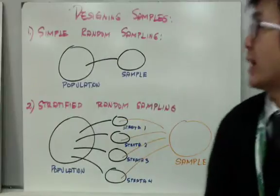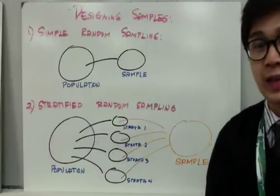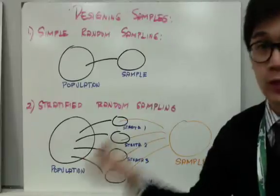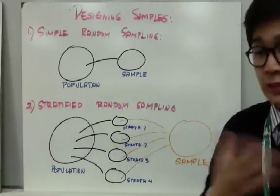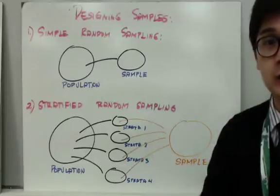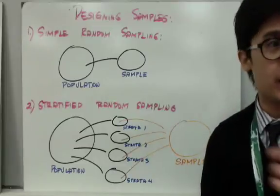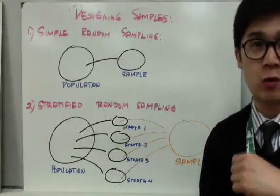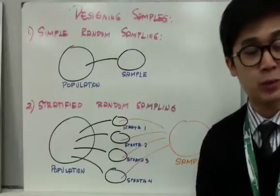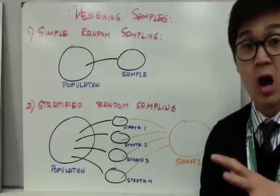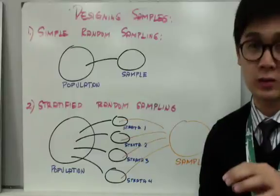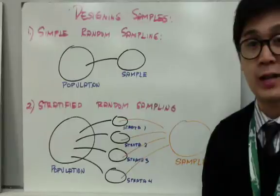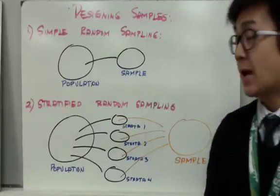In simple random sampling, you basically have a population and you take random individuals out of it, and that technique is what we call simple random sampling. An example: in all my students in AP Statistics, I give each one a number, put that number inside a box, and then pick the first 20 students from that box. By picking those students, I am performing simple random sampling.